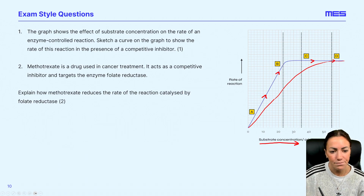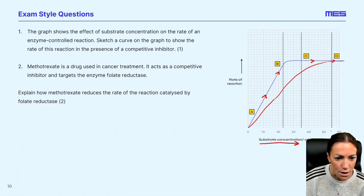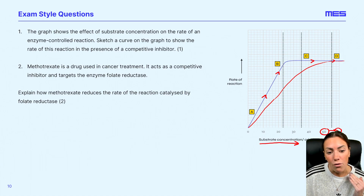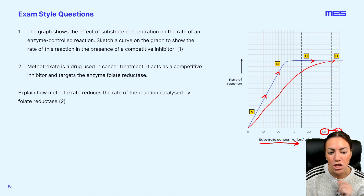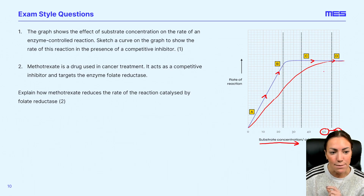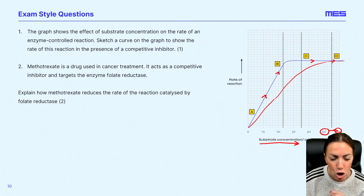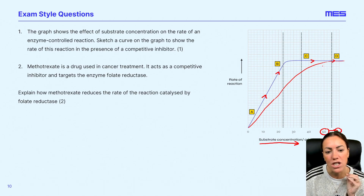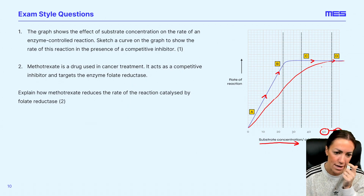Because it's a competitive inhibitor, at very high substrate concentrations the rate of reaction will no longer be reduced — the rate of reaction can reach the same maximum rate as if there was no inhibitor. It can reach Vmax, because at very high substrate concentrations the substrate will out-compete the inhibitor and all active sites will end up being occupied by substrate. So the line should be below the blue line but should meet up with it somewhere towards the end where substrate concentration is high.